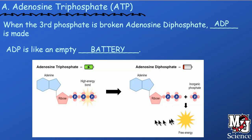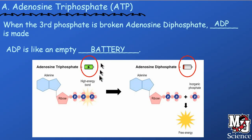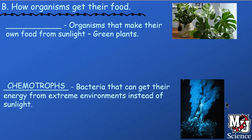Adenosine diphosphate is then recycled in the cells: other phosphates are attached to it, and that's part of the next process we'll talk about called cellular respiration — the making of adenosine triphosphate. So adenosine triphosphate is like a charged battery, and diphosphate is like an empty battery. Once you break off that phosphate group, the energy is used up by your cells, and then the ADP gets recycled.